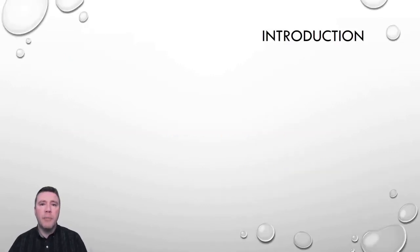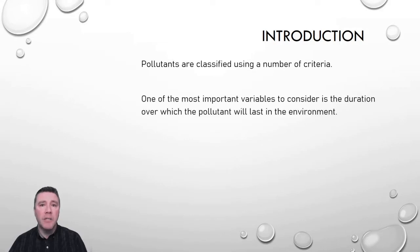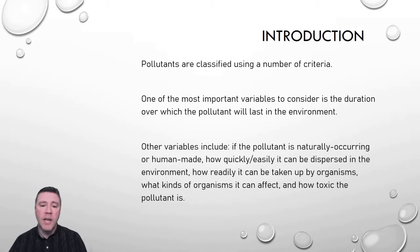We classify pollutants using a number of criteria. One of the most important is how long it lasts in the environment — how long does the pollutant last before it naturally degrades? We use a number of other variables as well, including if the pollutant is synthetic or natural, how quickly it can spread through air and water, how easily organisms can take it in, the effects it has on organisms, and how toxic the pollutant is.